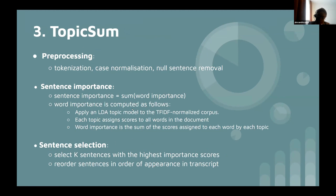Topic Sum is an extension of TF-IDF Sum. Rather than just using TF-IDF, you apply a topic model over the corpus. With, say, 10 topics, each topic assigns scores to words in the document. A word is only as important as the scores assigned to it by all the topics. You then compute sentence importance as the sum of word importances — the same as in TF-IDF — and select the most important sentences as the summary.